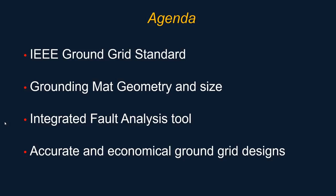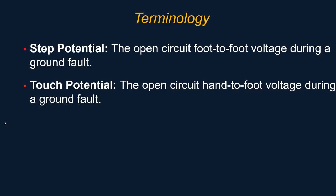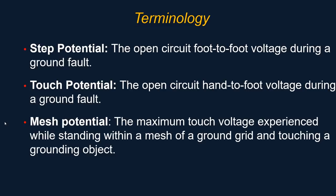We're also going to go over how to do an accurate and economical ground grid design. For the objectives, as all of you know, protecting life from the danger of electric shock is essentially our objective for this type of analysis. Another objective is to isolate faults as soon as possible by providing a low impedance path to ground in order to activate your protection, such as overcurrent grounding protection. Let's begin by going over some of the essential terminology we're going to continue using for the rest of the presentation.